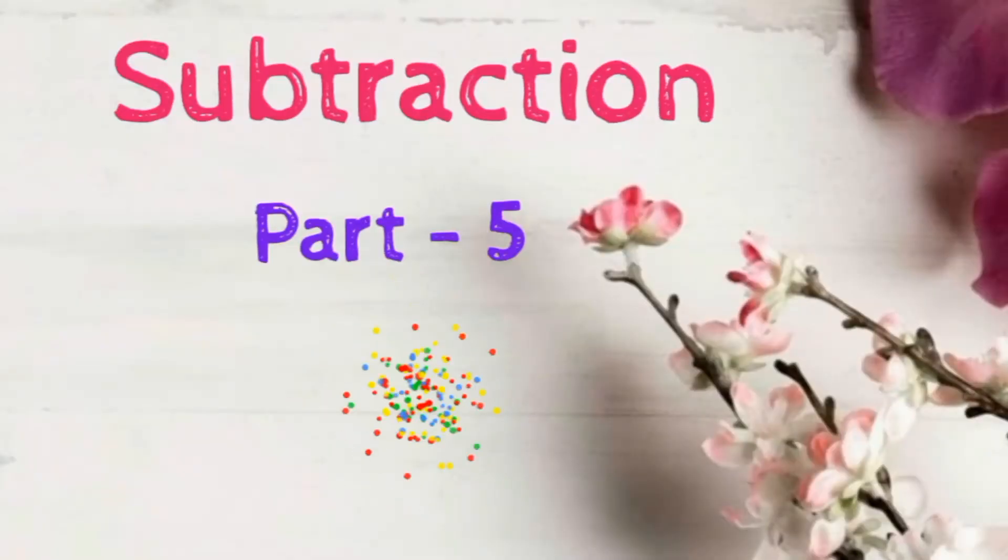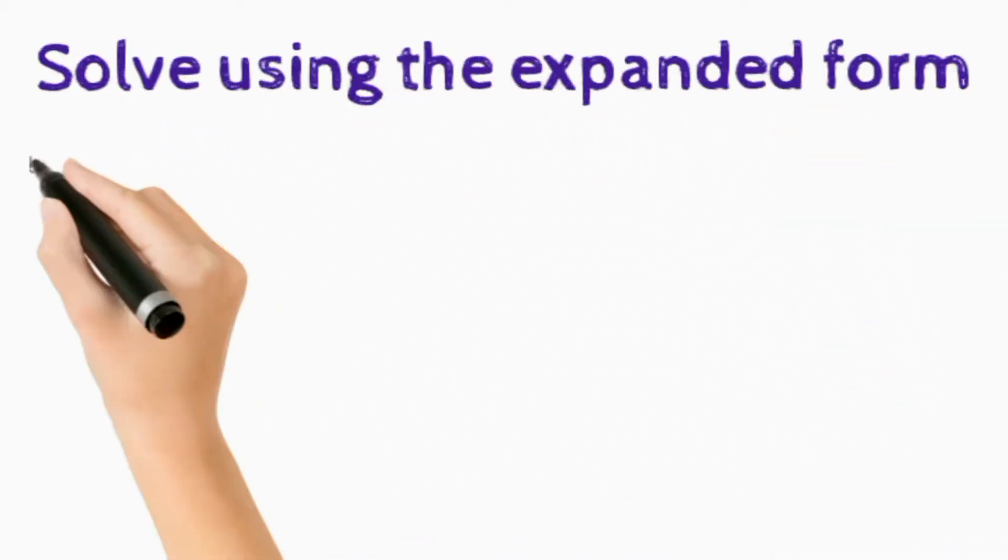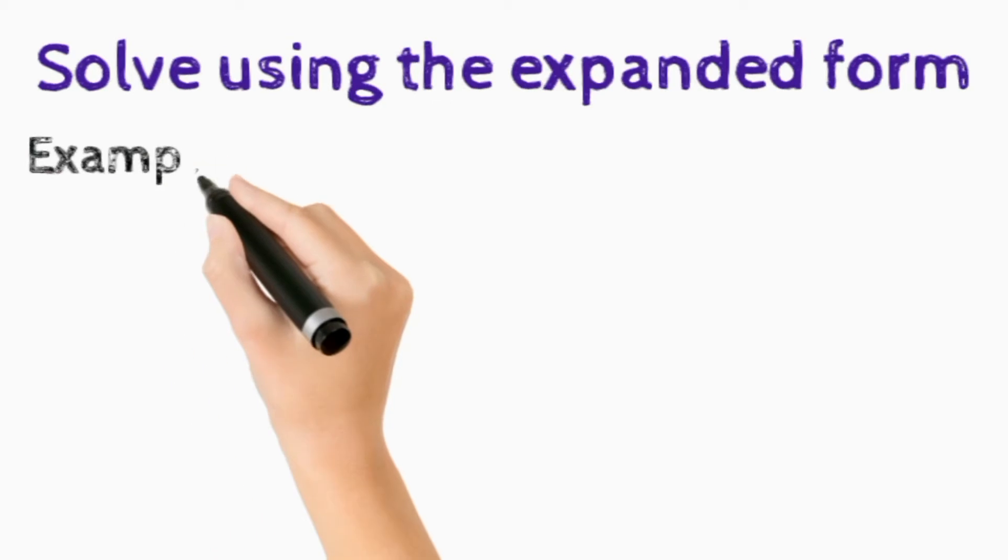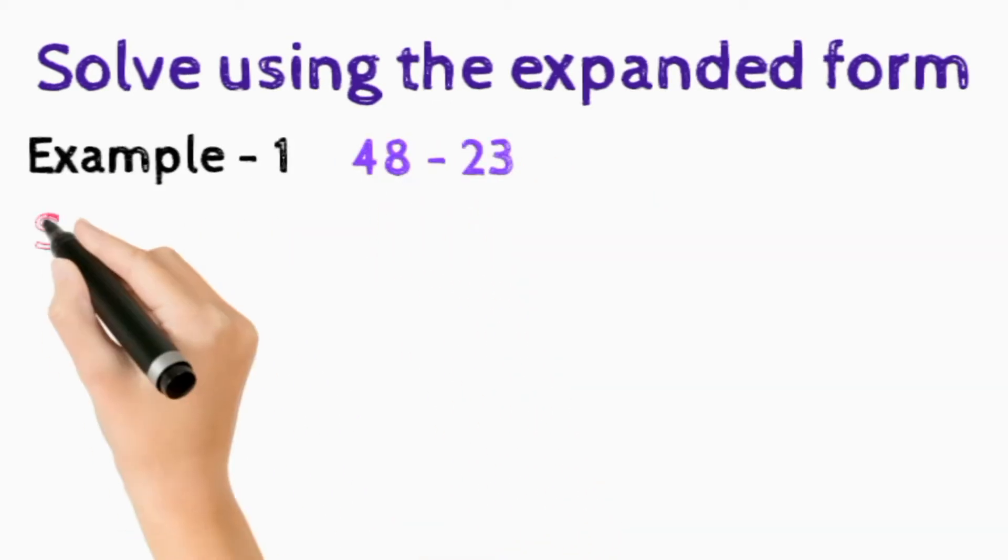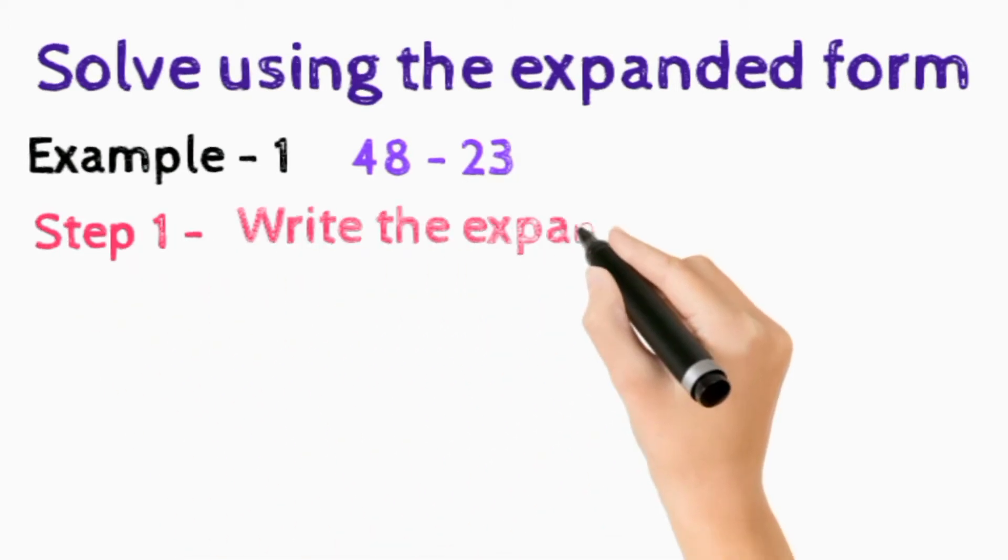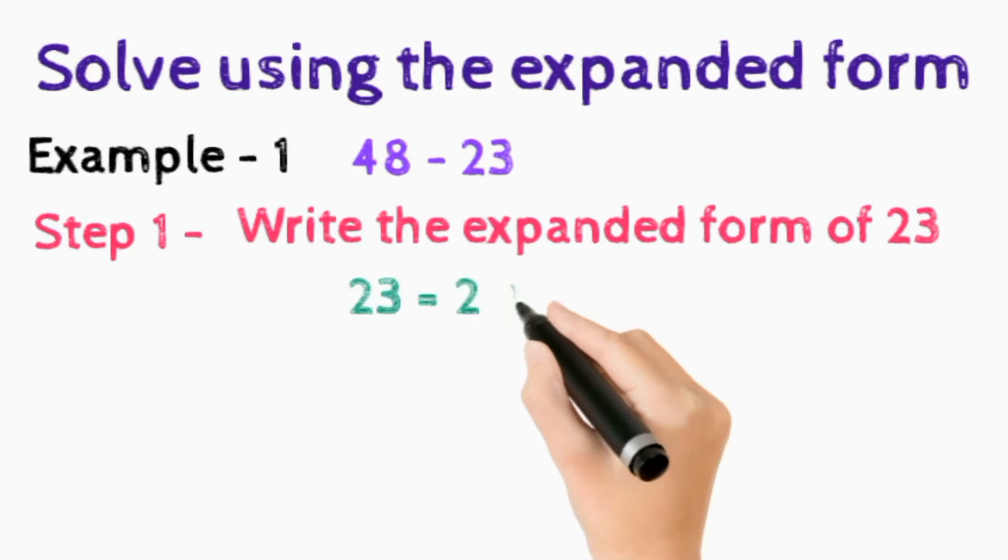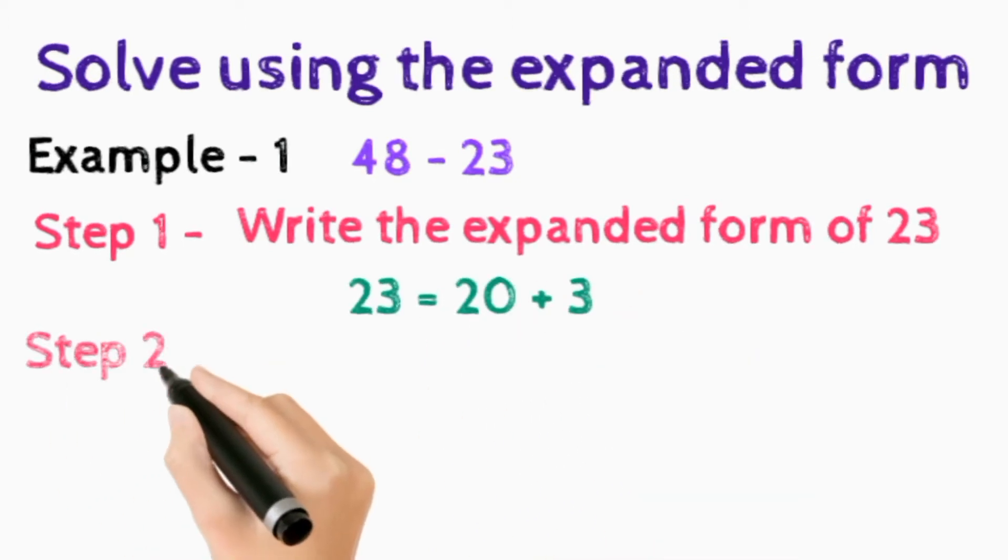Today my topic is subtraction part 5. Here we solve using the expanded form. For example 1, 48 minus 23. In step 1 we write the expanded form of 23, so 23 is equal to 20 plus 3.